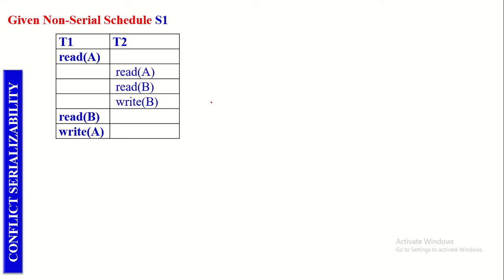Let us discuss Conflict Serializability with an example. This is the given Non-Serial Schedule, S1. It is Non-Serial because before the completion of T1, T2 is permitted to execute. According to Conflict Serializability, to determine whether the given Non-Serial Schedule is Conflict Serializable or not, we have to swap the Non-Conflict Operations. After swapping, if we are able to make the Serial Equivalent of this, then it is known as a Conflict Serializable Schedule.